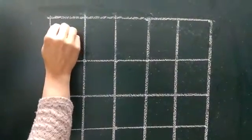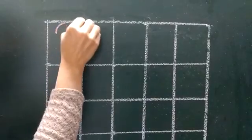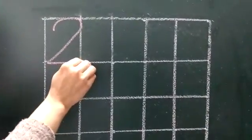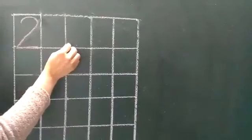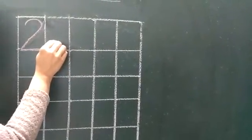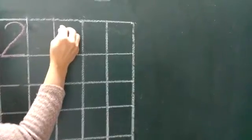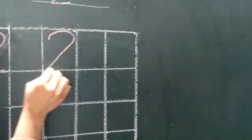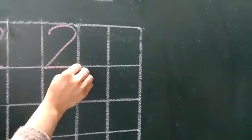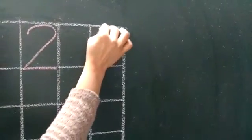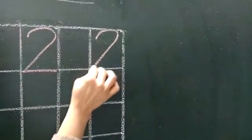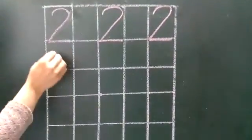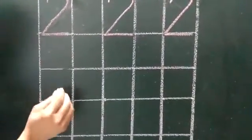To write number 2, first make an anti-curve. Then you have to put a sleeping line. What is it? 2. Again: anti-curve, then sleeping line. What is it? 2. We will learn what we will write — 2. Anti-curve, then sleeping line.